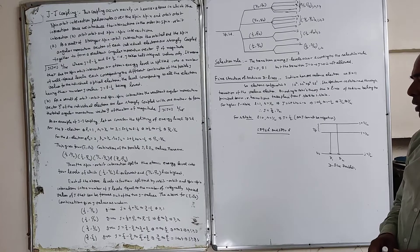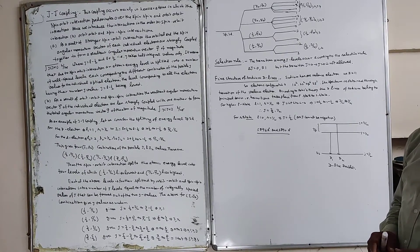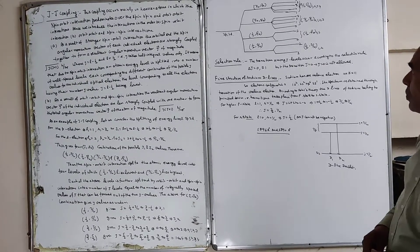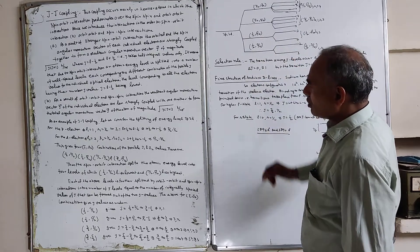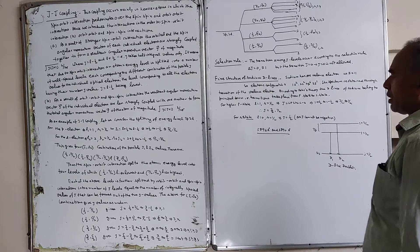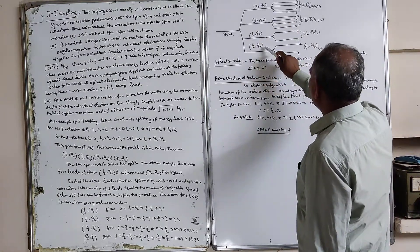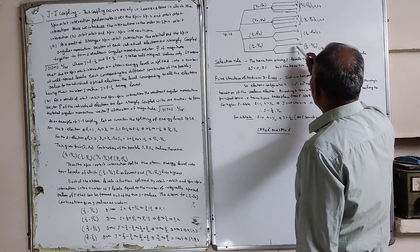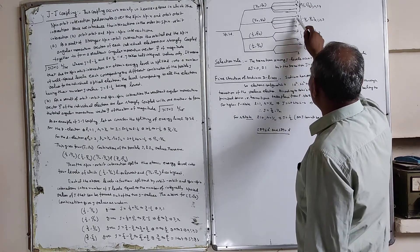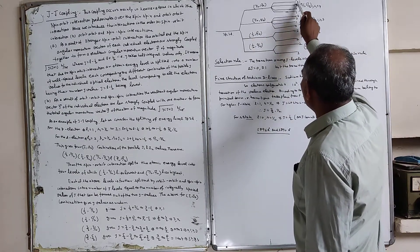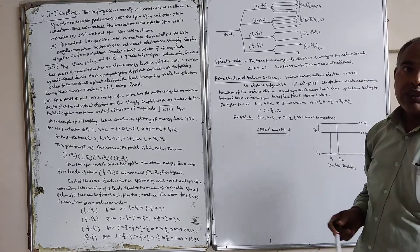For combination (3/2, 5/2): j value ranges from 5/2 minus 3/2 to 5/2 plus 3/2, that is 1 to 4, so integer values 1, 2, 3, 4 giving 4 levels. For (1/2, 5/2): j value is 2 or 3, giving 2 levels. Summarizing: combinations give 2 + 2 + 4 + 4 = 12 total energy levels.